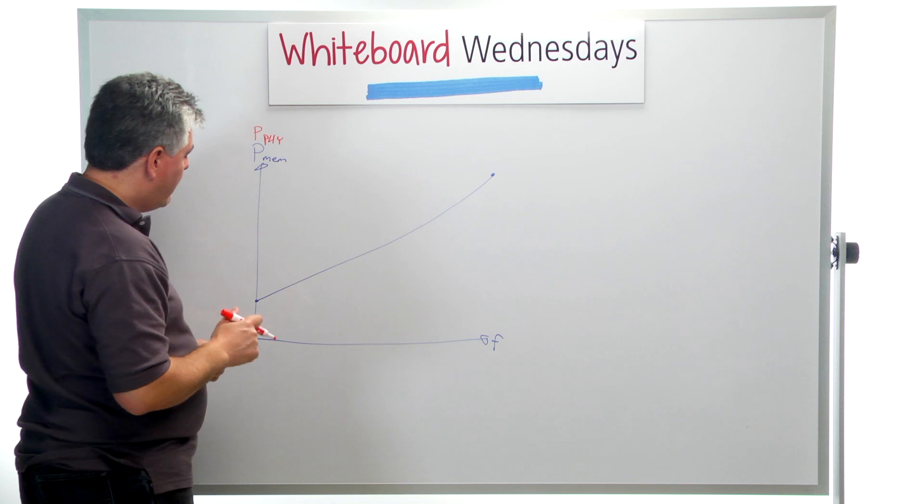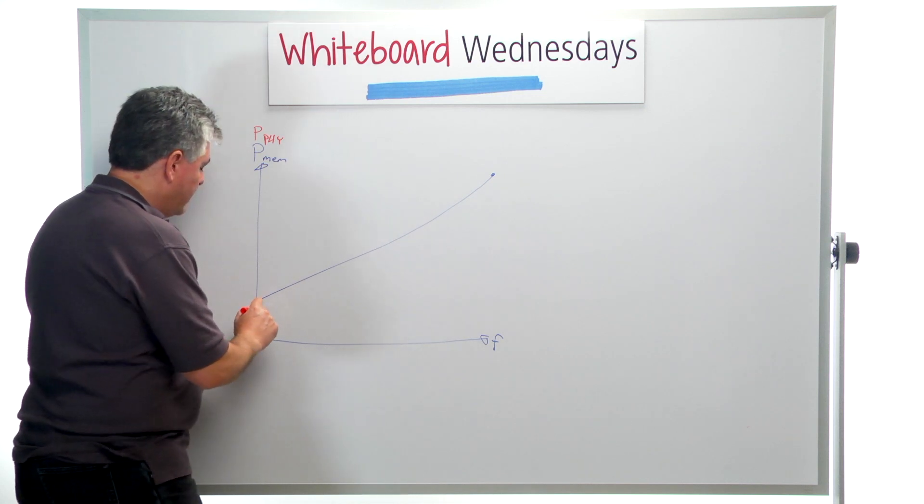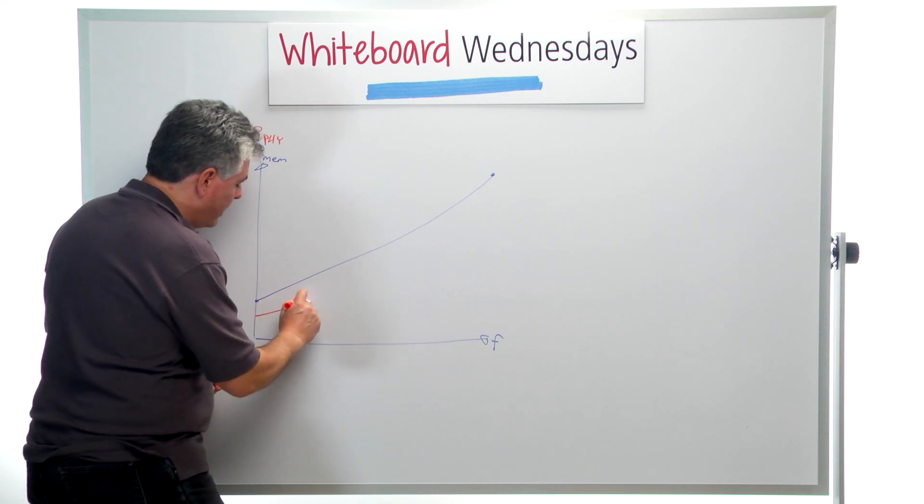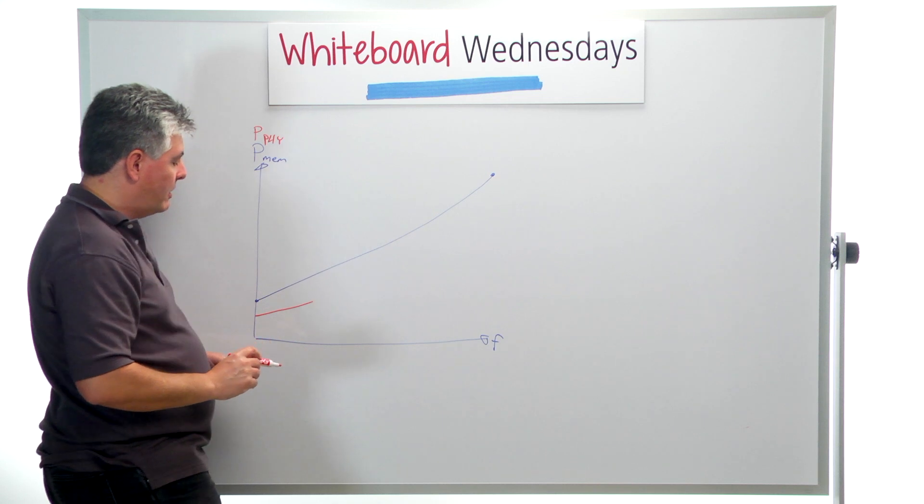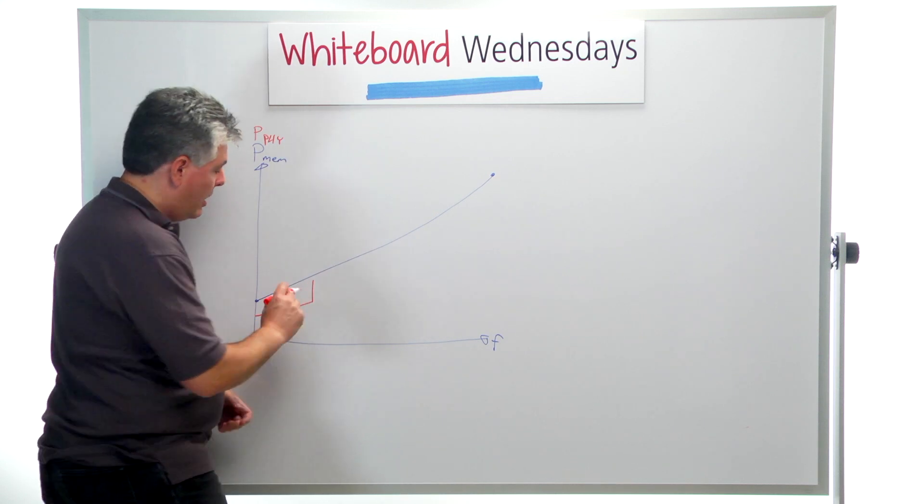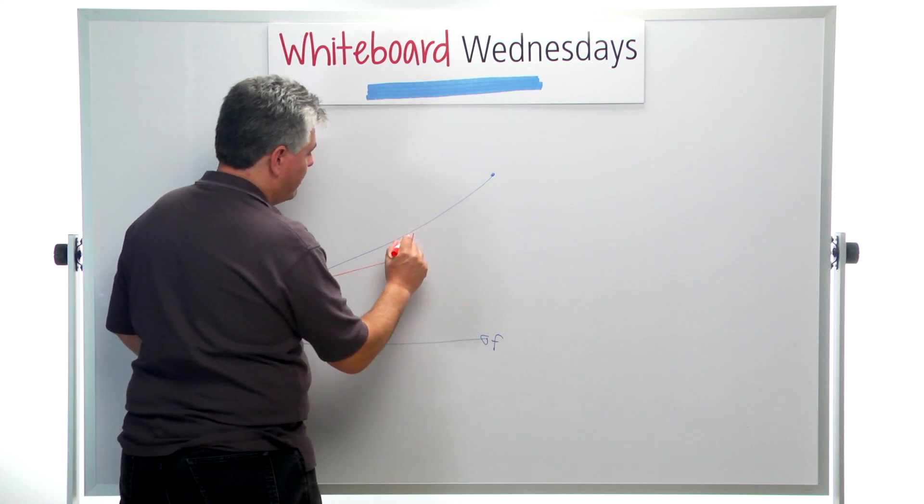So what you might find in the DDR PHY is that you may have some function that is linear with frequency up to a point, and then you're going to have a step function upwards. And again, there may be another linear section, and then a step function up, and a linear section, and a step function.